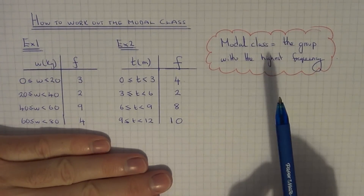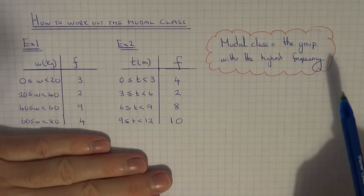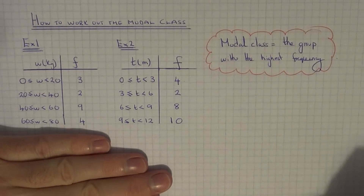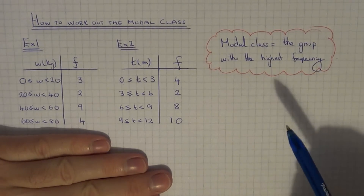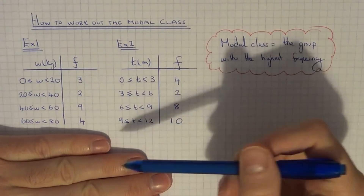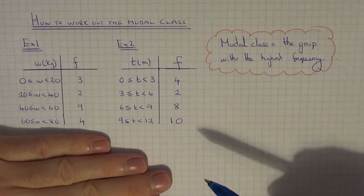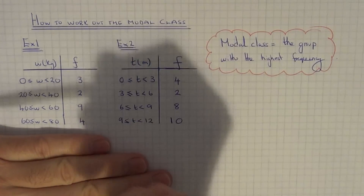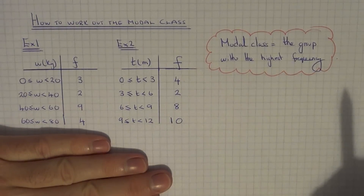The modal class is the group with the highest frequency. So what you need to do is just look down the frequency column for the highest frequency and write down the group which matches it.